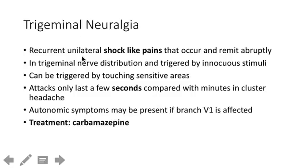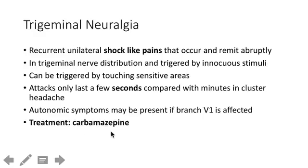Trigeminal neuralgia is easy to differentiate from cluster headaches if you know the classic symptoms: shock-like pains that come out of nowhere, triggered by touching the face or even a bad smell. The key is that symptoms only last a few seconds — severe, sharp, shock-like — and must occur along the distribution of cranial nerve five. If along the V1 branch near the eye, there may be autonomic findings. Treatment for trigeminal neuralgia is carbamazepine.